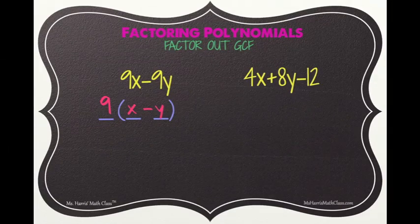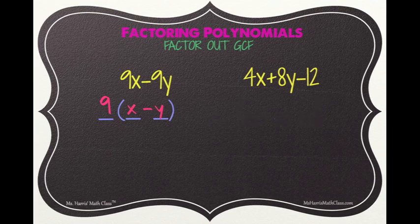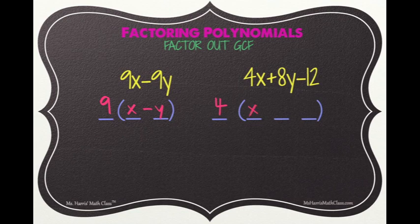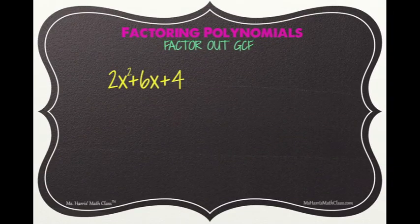Now let's look at the trinomial 4x plus 8y minus 12. We see there is a common factor, so we draw a skeleton leaving a space on the outside for the GCF and three spaces on the inside for the remaining factors. The GCF is 4, which goes on the outside. 4 times x is 4x, 4 times positive 2y is positive 8y, and 4 times negative 3 is negative 12. So 4 and (x plus 2y minus 3) are your factors.